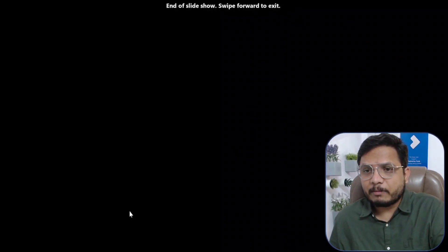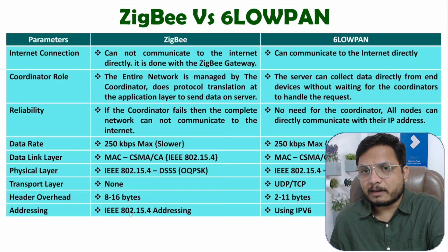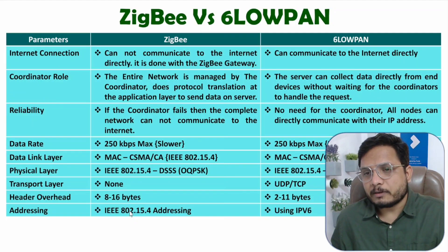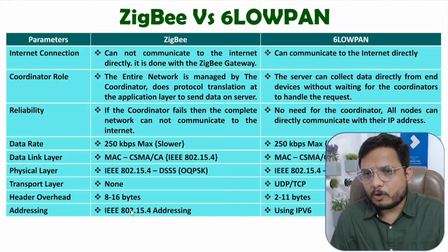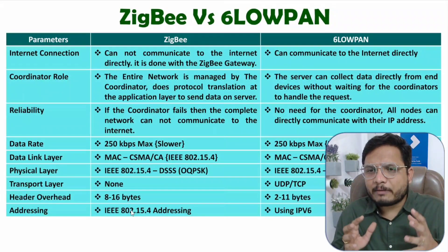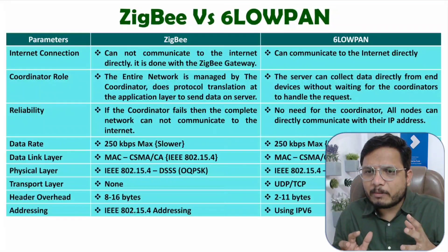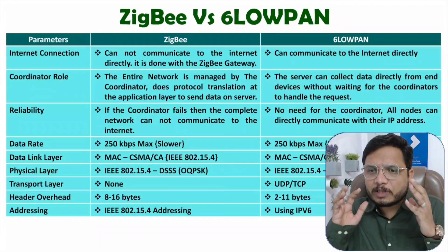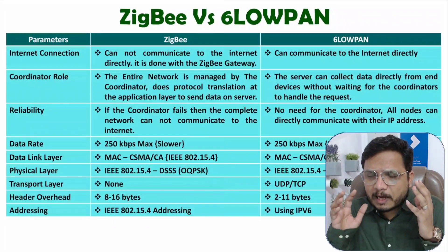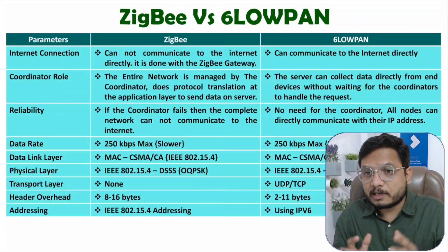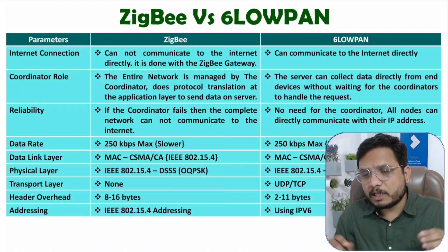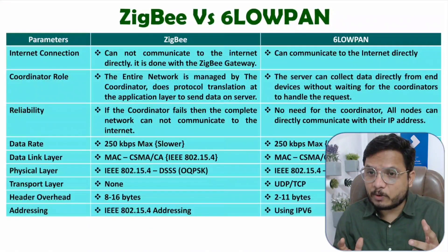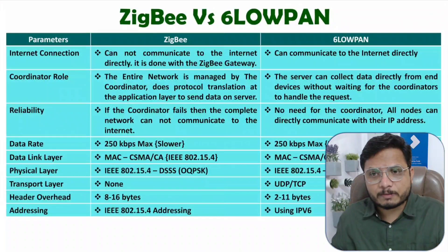Those are the different parameters comparing ZigBee and 6LoWPAN. I hope you now have a fair enough idea about how both of these protocols function. If you have anything to share, please note it in the comment section — I will be happy to help you. Thank you so much for watching this video.